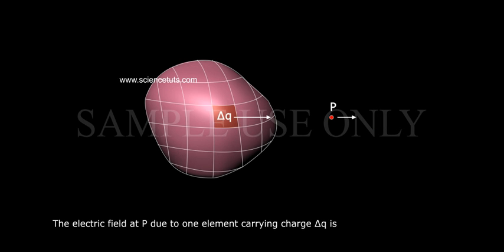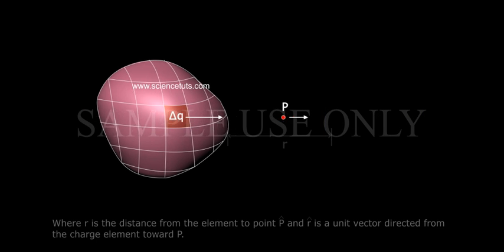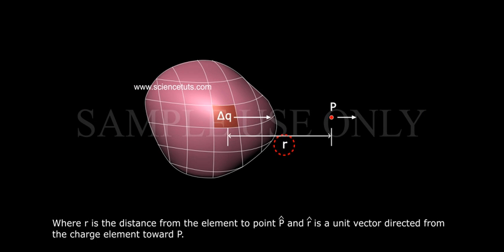The electric field at P due to one element carrying charge delta q is delta E equals k delta q by r square r cap, where r is the distance from the element to point P and r cap is a unit vector directed from the charge element toward P.